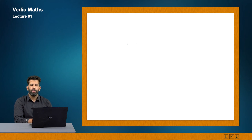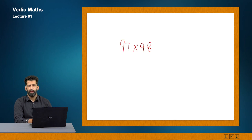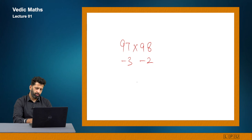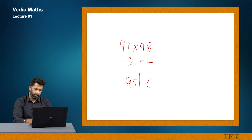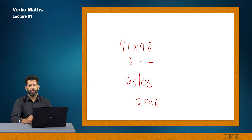For 97 × 98: difference here is minus 3, here is minus 2. So 97 minus 2 gives 95 (left part). On the right-hand side: minus 3 into minus 2 gives 6. Since there is only one digit and I need 2, I prefix a 0, giving 06. My answer is 9506.